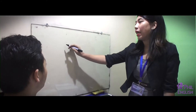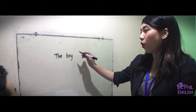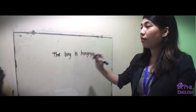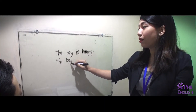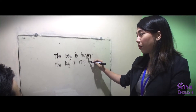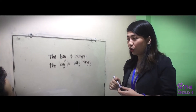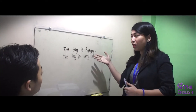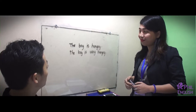So if there are two boys — the first boy: the boy is hungry. The second: the boy is very hungry. So you should choose only one boy to help. So which one among them would you like to help? The second boy.